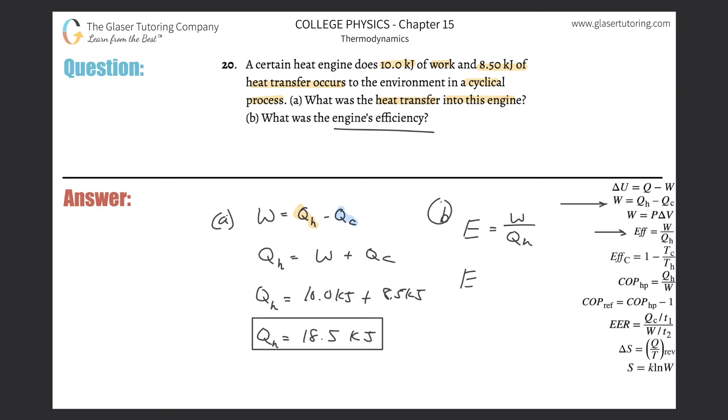We calculated that. All we have to now do is plug in. So the work was 10, the hot reservoir was 18.5. And we're going to get now a value of 10 divided by 18.5, it's about 0.54. You can convert that into percent, that'd be 54% if you want, but that sounds good.